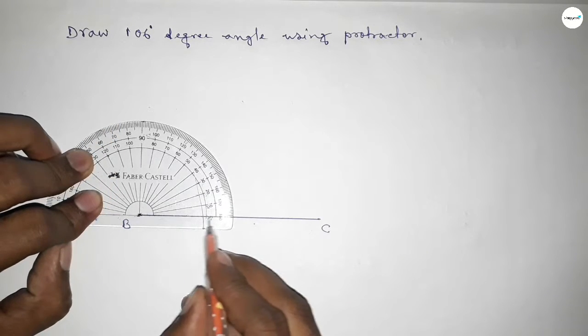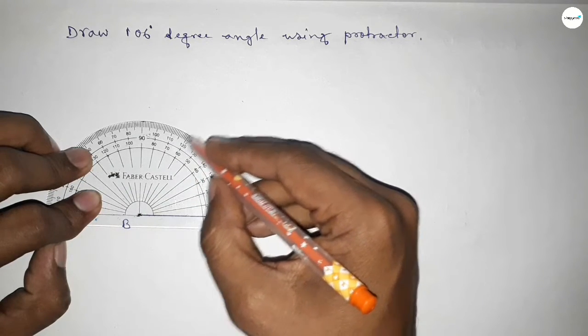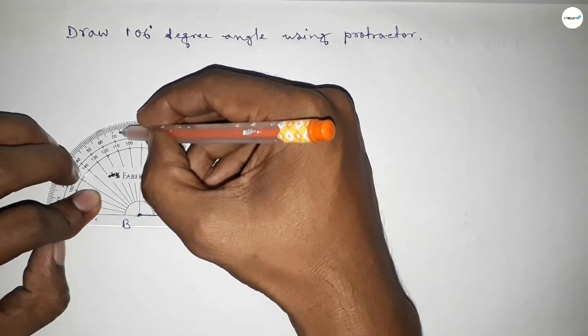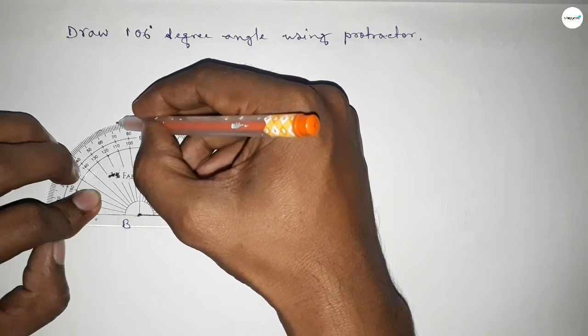Starting angle: 0, 10, 20, 30, 40, 50, 60, 70, 80, 90, and this is 100, 105, 106. So this is 106 degrees.